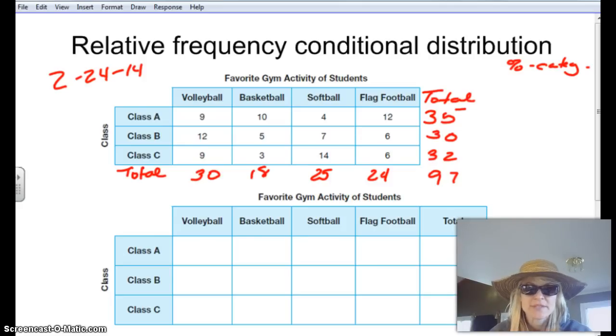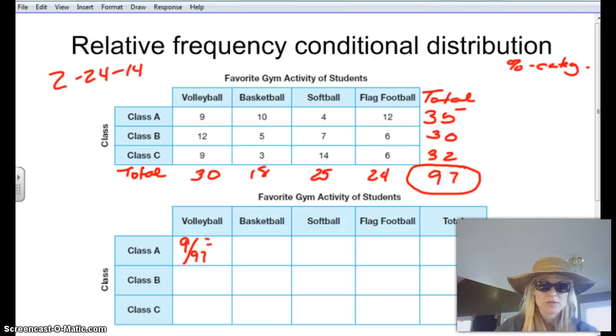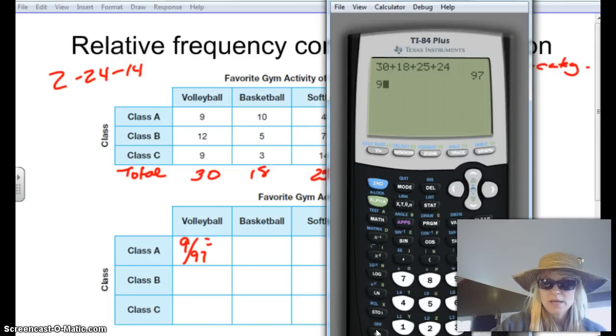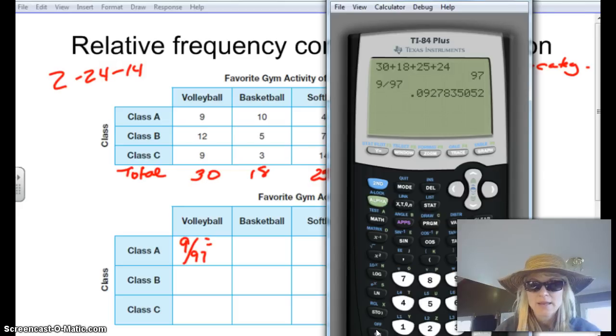So now we want to go through and find our percentages to create the relative frequency conditional distribution here. So volleyball, I know that I have 9 in class A, and we do it out of the total amount of students, and that's going to be my 97 here. So I'm going to do 9 out of 97. So we know that that is a fraction, and I'm trying to find percents. So we're just going to do 9 divided by 97, and looking at that, I look at this 9. To the right is a 2, so that's going to stay at 9% right here.